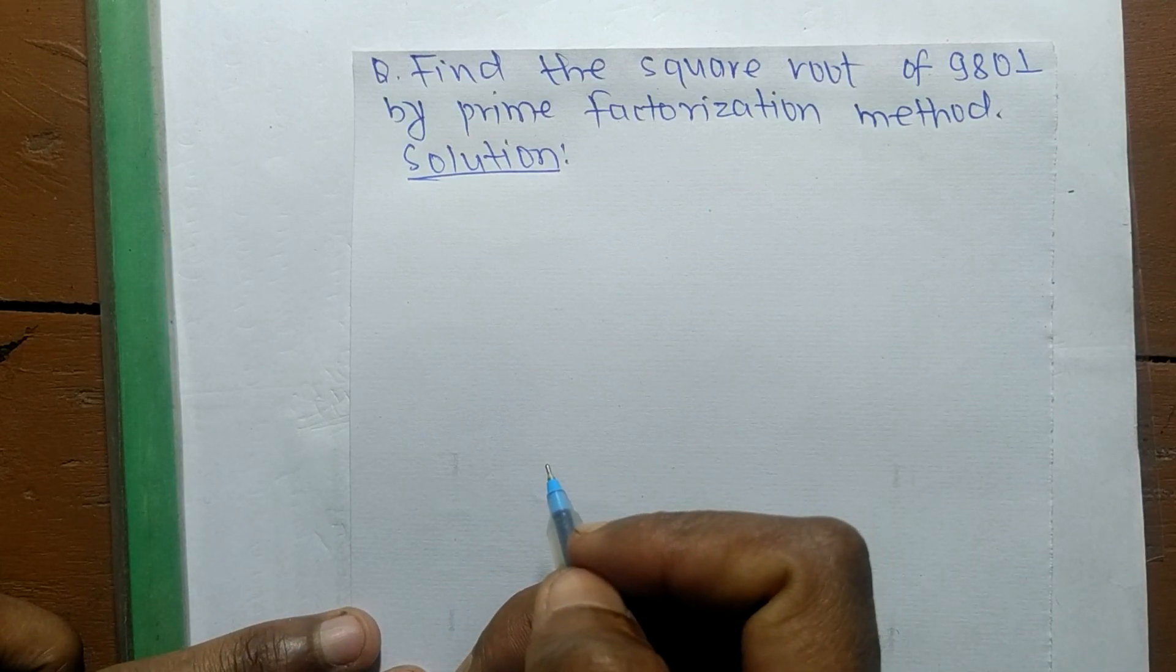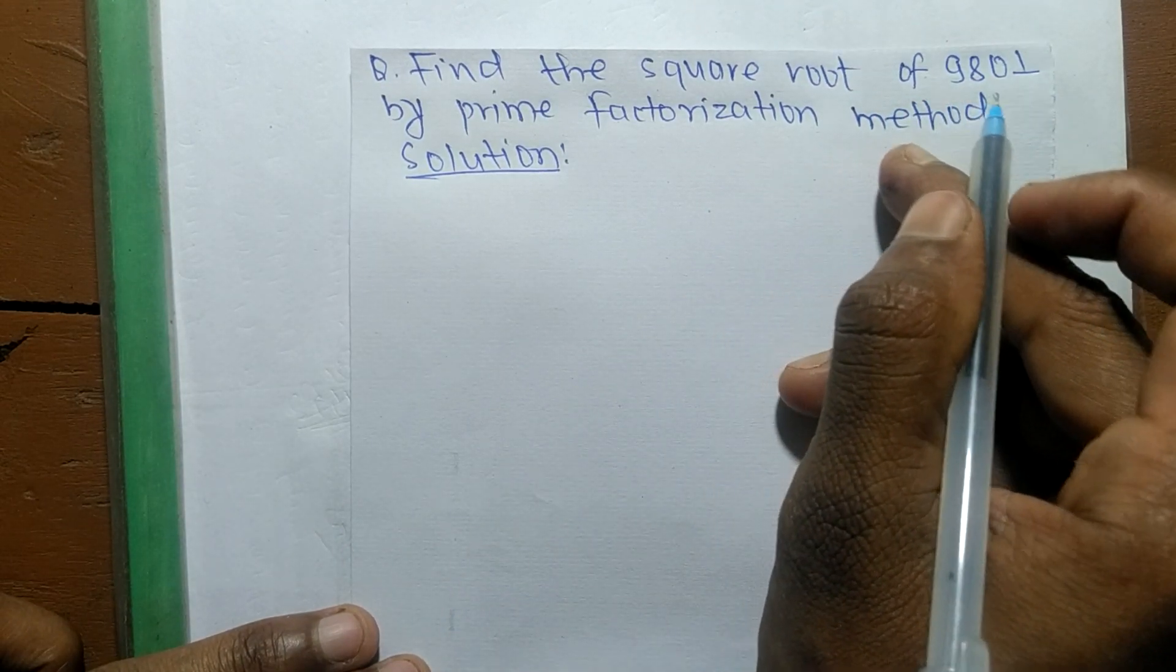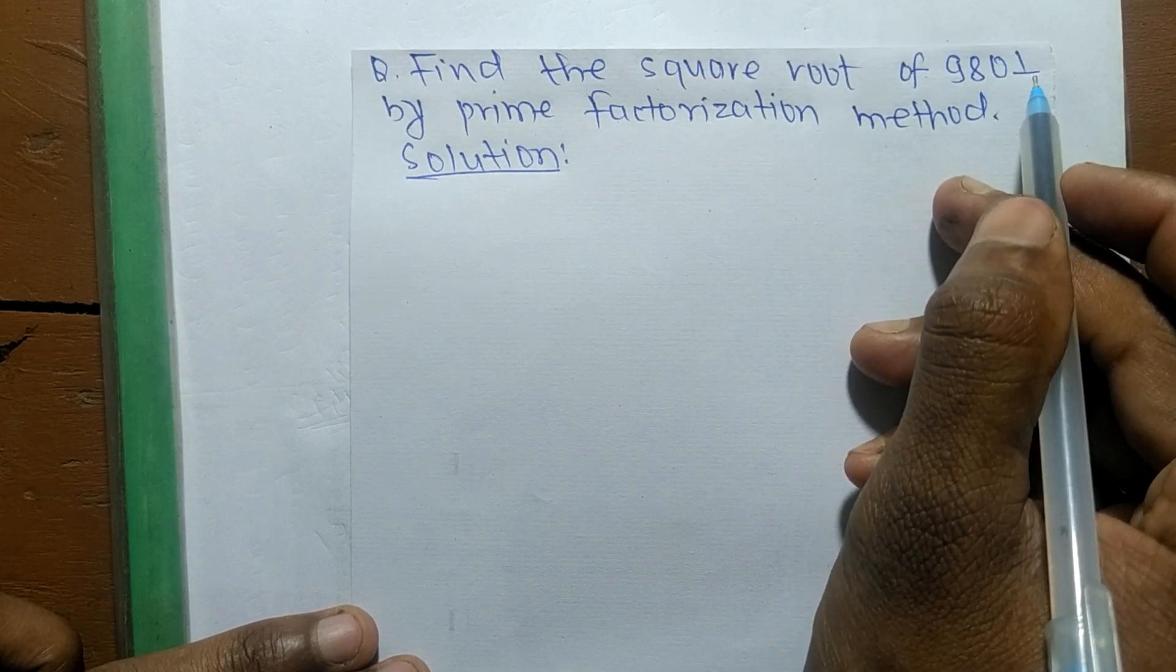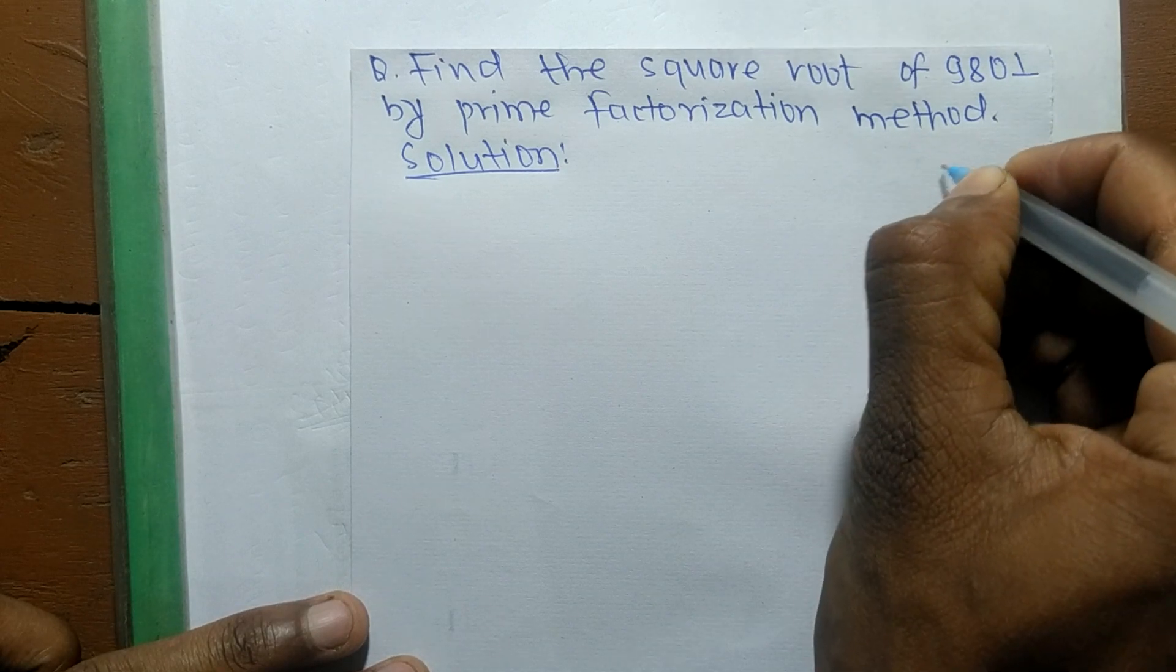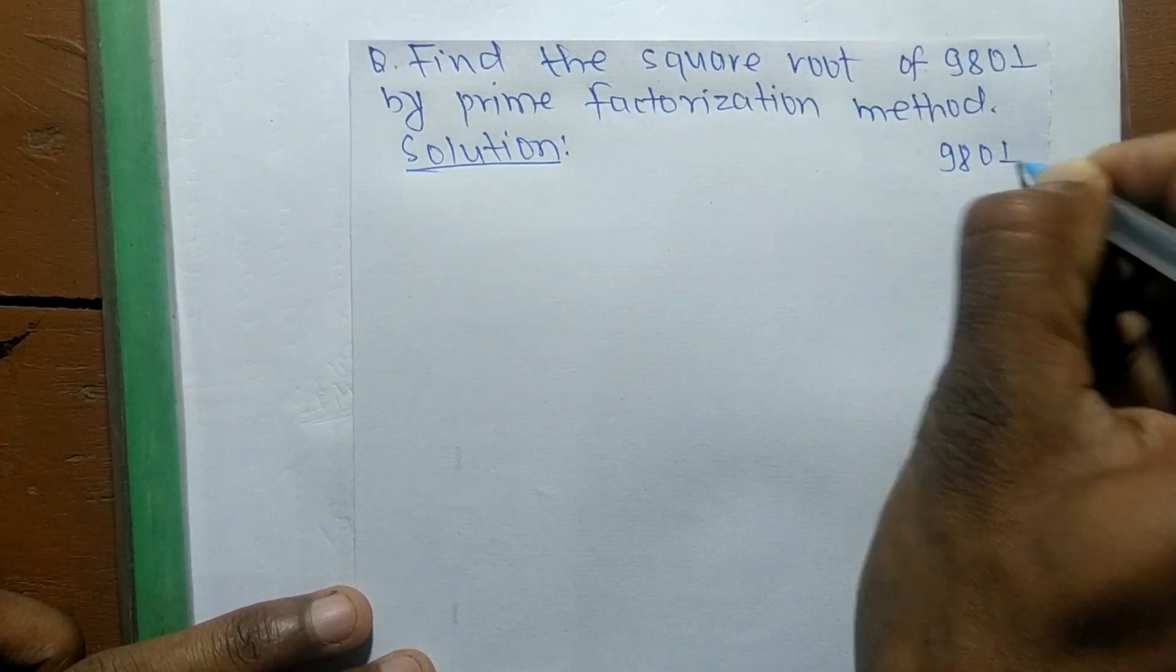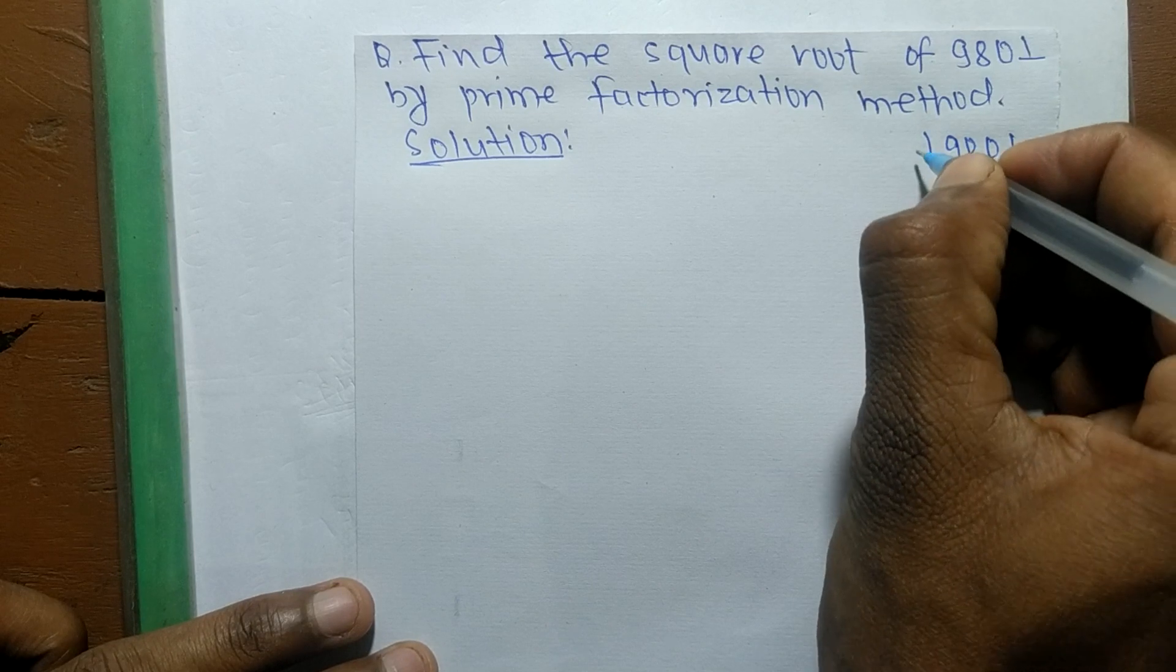Today in this video we shall learn to find the square root of 9801 by prime factorization method. So first, we shall find out the prime factors of 9801.